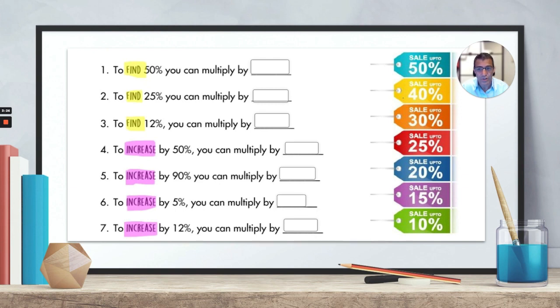So for the first question, to find 50%, you should multiply by 0.5. To find 25%, you should multiply a number by 0.25. To find 12%, you can multiply a number by 0.12.